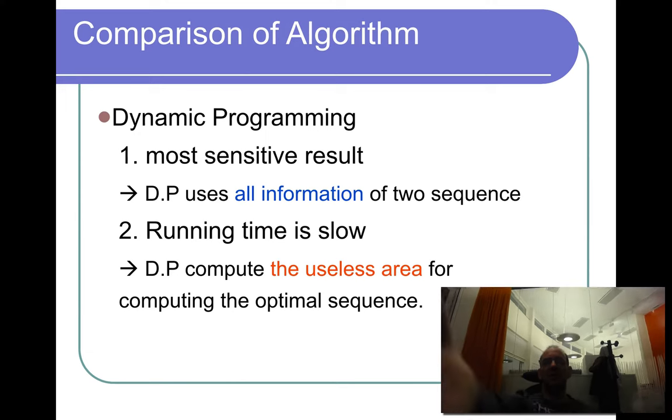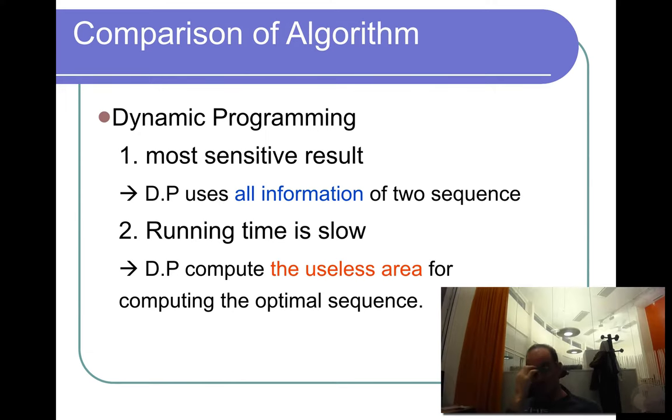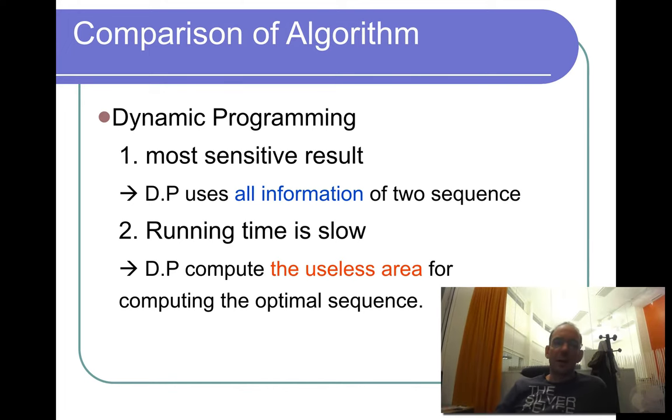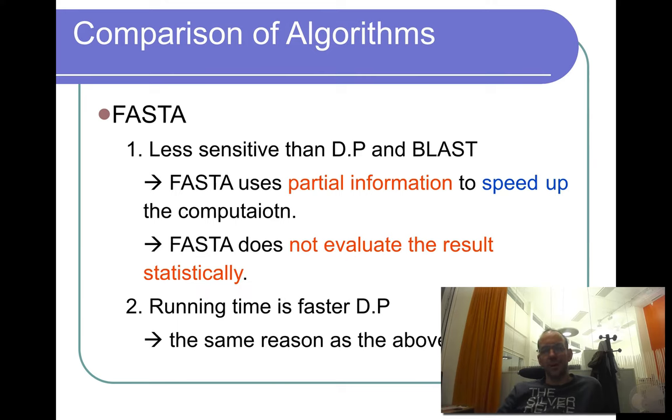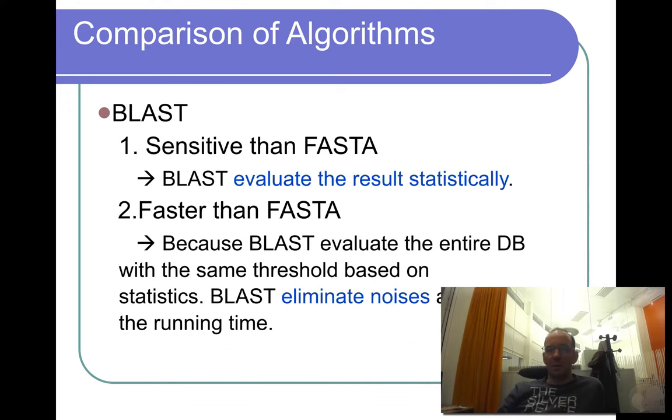So in general, you would say that dynamic programming would give the most sensitive results, but because it uses all the information of those sequences, the running time is slow because most of the time is spent calculating useless areas of computing the optimal alignment. So you calculate - particularly if you search a database, think about it. In a database, you want to find the homologous pairs, but most of the sequences in the database are not related to the query sequence. And therefore, you will spend time figuring out this matrix, calculating it, and it's not related. So if you're going to ignore that area, you're going to be much faster. FASTA is less sensitive, clearly, than dynamic programming, and also than BLAST, but it's much faster than dynamic programming because it speeds up things.